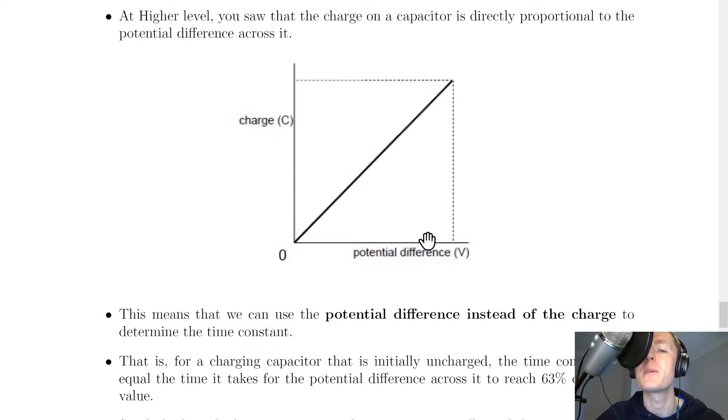This graph shows charge on the capacitor against potential difference across the capacitor, and you'll see that the two are directly proportional. So we have a straight line going through the origin.